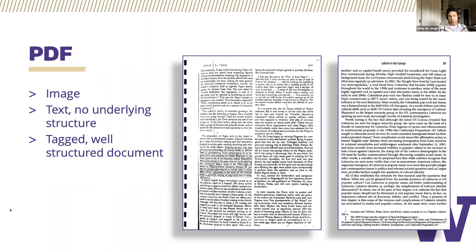The second type of PDF document is one that has text but no underlying structure. Structure is what allows screen reader users to navigate and jump from section to section and heading to heading. Without structure, users are forced to listen to the text of a document from the very top of the page to the bottom without the ability to navigate exactly where they want to go. The third type of PDF document is one that is tagged and well structured with appropriate heading levels, lists, and other elements that allows screen reader users to search a document and consume the information in a more predictable way.